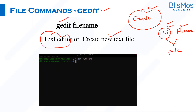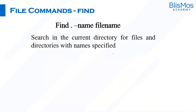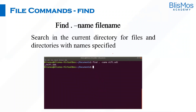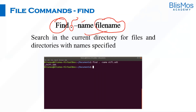If you see here, we are giving gedit followed by the name of the file, so this will create a file called that file name. We have created multiple files. But if you want to search for a specific file, we can use the find command. Use a dot to say you are searching in the current directory, then provide the name flag and the name of the file you are searching for.